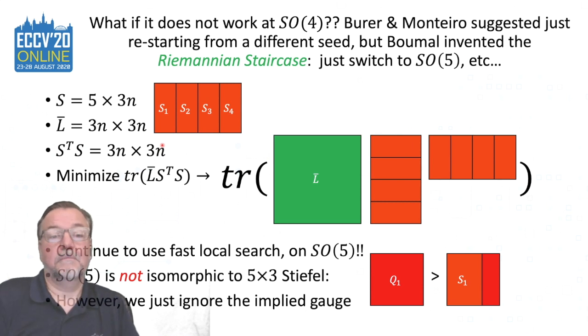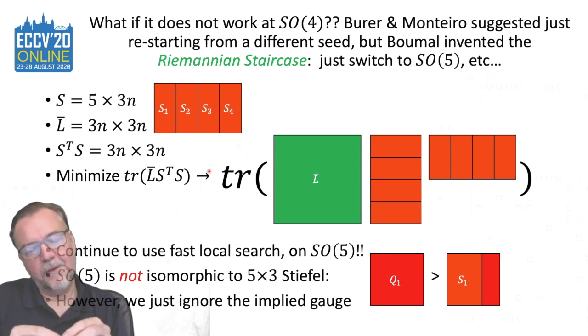What if you get stuck? What if you get stuck at SO4? Well, Boumal and Monteiro suggested, well, just pick another random initial estimate, and they're right, but you're throwing away all this work. So another beautiful piece of work is by Boumal in 2015, who introduced the Riemannian staircase. What we do is we don't stay at the SO4 level. We just go up to SO5, and we actually pick up where we left off. So the cost function, we just slightly perturb to get rid, but the local minimum in SO4 becomes a saddle point in SO5. We give it a nudge off the saddle point, and we continue optimizing.